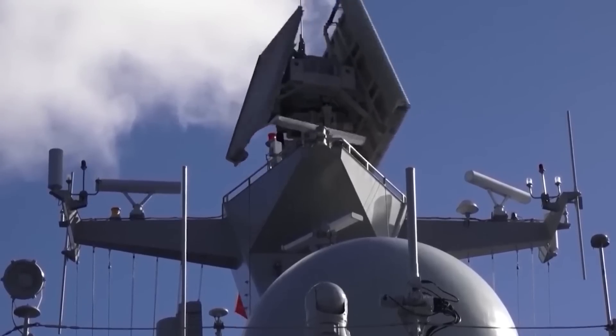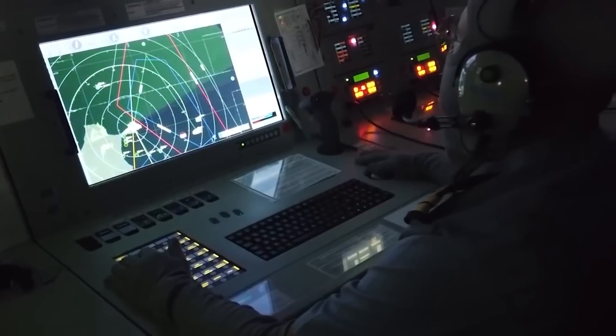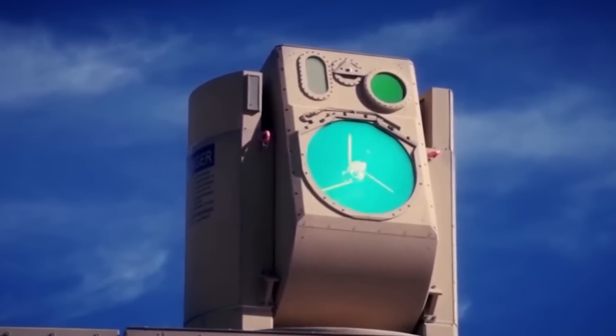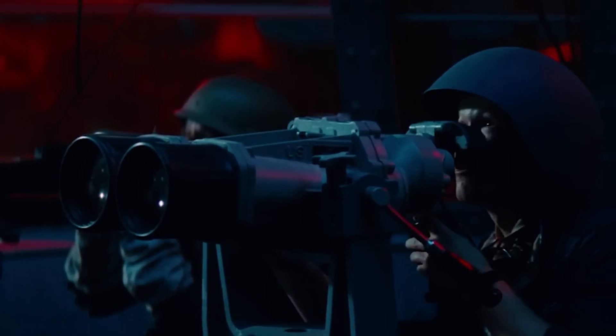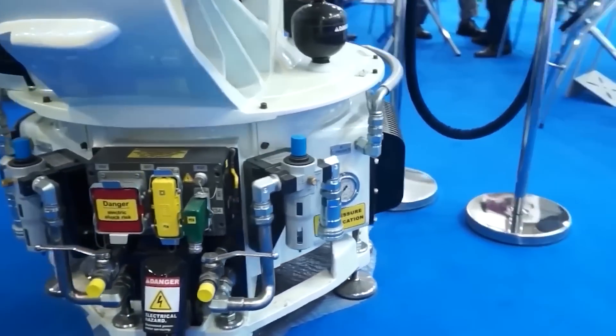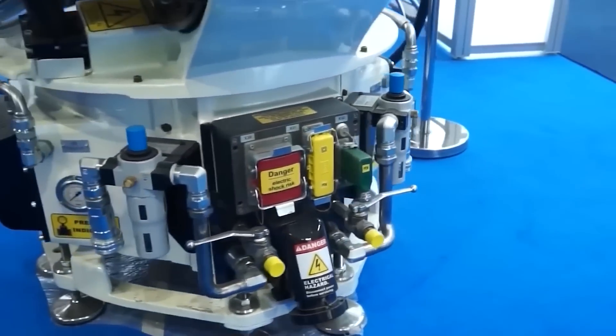The DE M-SHORAD systems are not only capable of engaging drones but also capable of destroying enemy shells in flight. This is the first ever system capable of intercepting enemy artillery shells in the air before they hit the ground. Compared to the Israeli laser, this one looks a bit more advanced and sophisticated. However, not everything is so perfect.